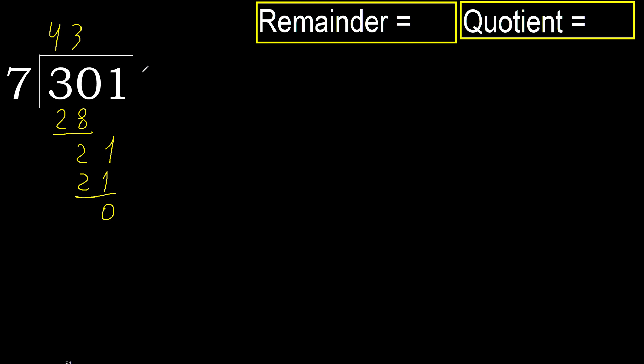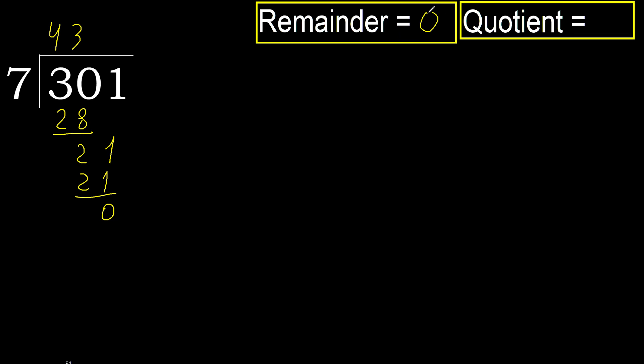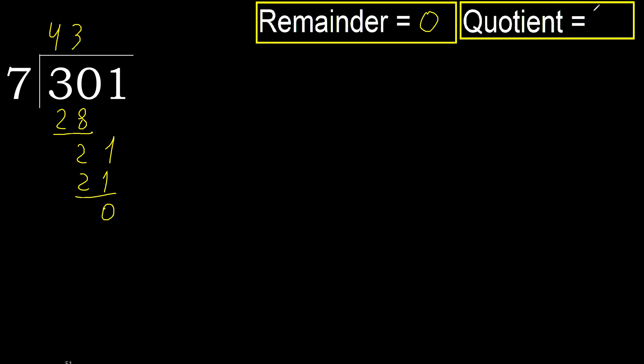Next — there is no remainder, therefore finish. 301 divided by 7 is 43.